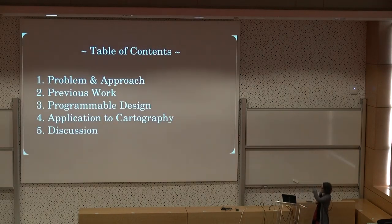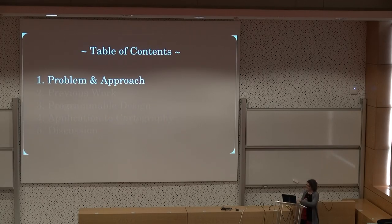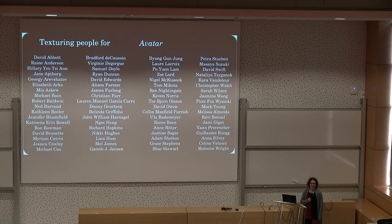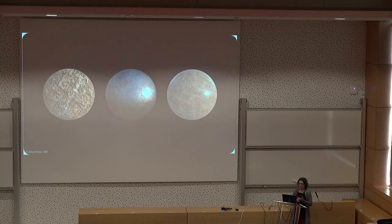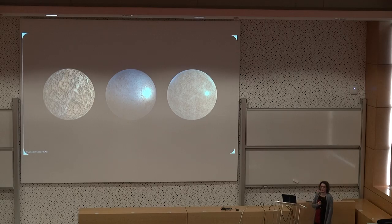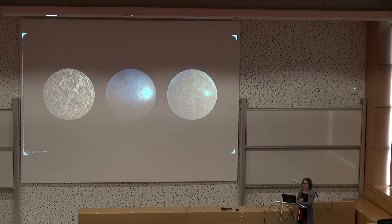Here is a short table of contents for my talk. First, what is the problem? Texturing is a hard task. Here are all the people acknowledged for texturing in Avatar, for example — it needs a lot of work to design, which is why we think a computer could be helpful. Since years, procedural textures in graphics have been well developed, and especially Substance software is more and more used by a lot of companies for movie making.